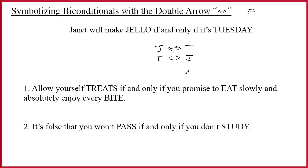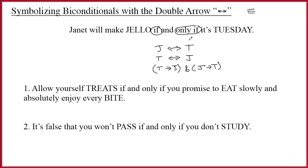One other point is that a double arrow is really a symbol of convenience — we wouldn't have to have it in our system. Notice that 'if and only if' is composed of an 'if' and an 'only if.' So we could symbolize the sentence as t arrow j (if it's Tuesday she'll make jello) and j arrow t (she'll make jello only if it's Tuesday). These three symbolizations are all logically equivalent.